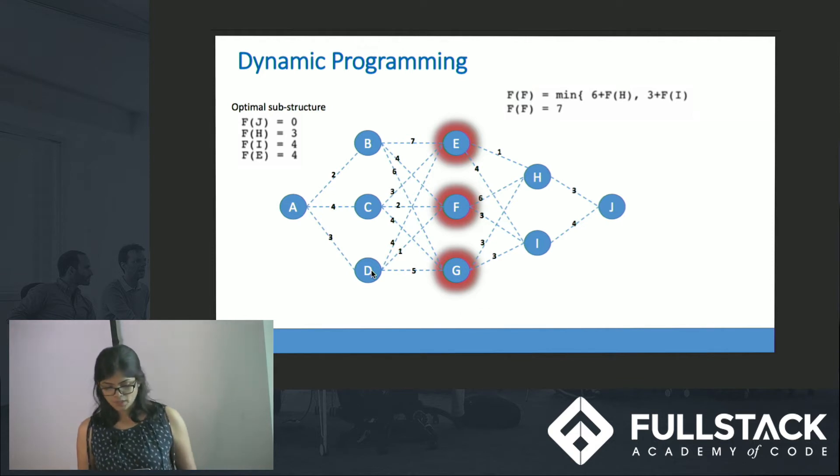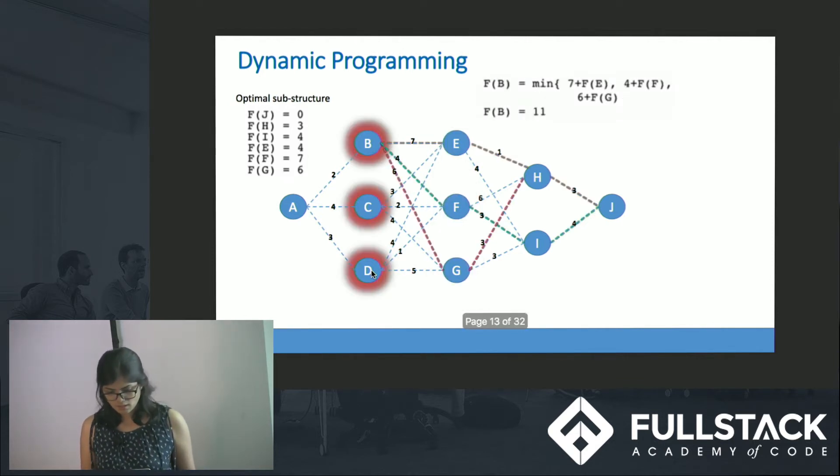Likewise I compute for f(j) and other nodes. If I look at f(b), so f(b) would be minimum of a length from B to E and f(e), or B to F and f(f), or B to G and f(g). We notice here we are using f(e), f(f) and f(g) which is already being computed. I select the best path which results in f(b) being 11.